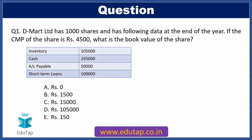As per our first question, DMART Limited has 1000 shares and has the following data at the end of the year. If the CMP, that is current market price of the share, is Rs. 4500, what is the book value of the share? Options: A) Rs. 0, B) Rs. 1500, C) Rs. 15,000, D) Rs. 1,05,000, and E) Rs. 150. This question comes from the equity valuation model and income statement and balance sheet part of the finance syllabus. If your concepts are clear, this will be a cakewalk; otherwise it might be a little difficult.